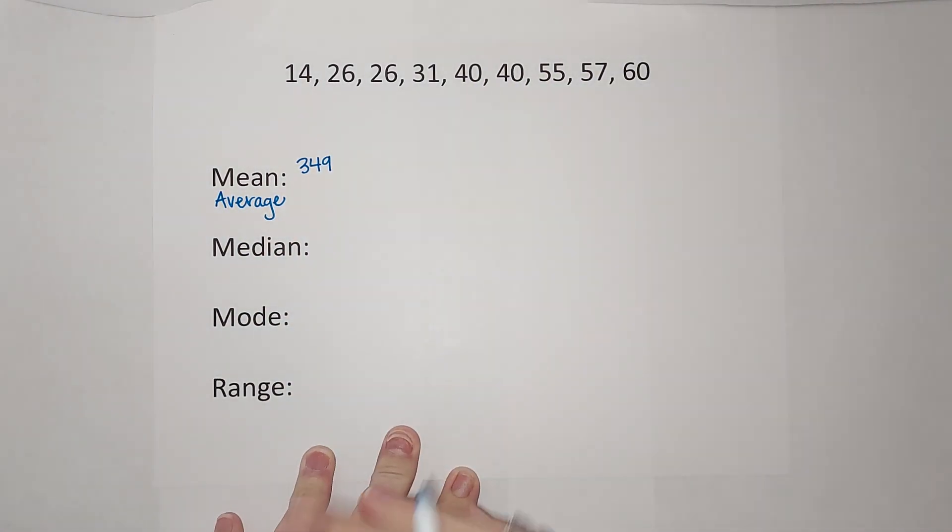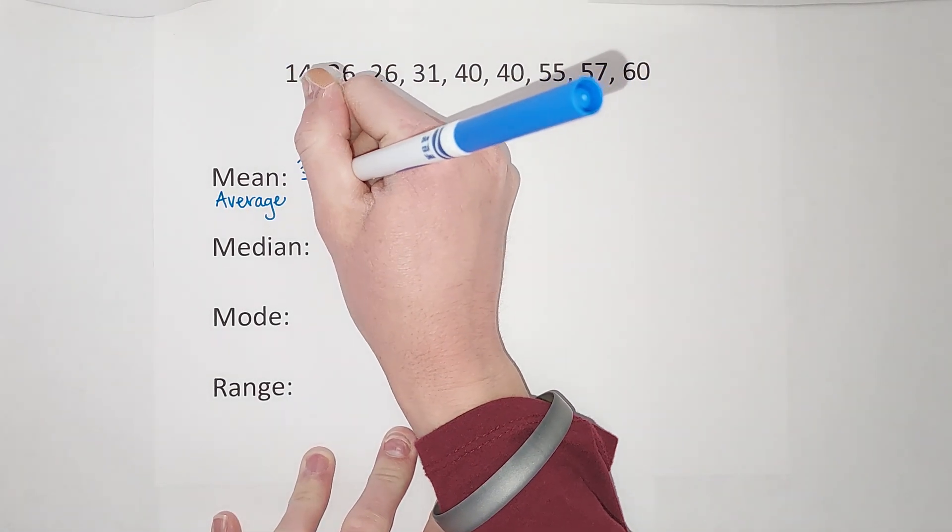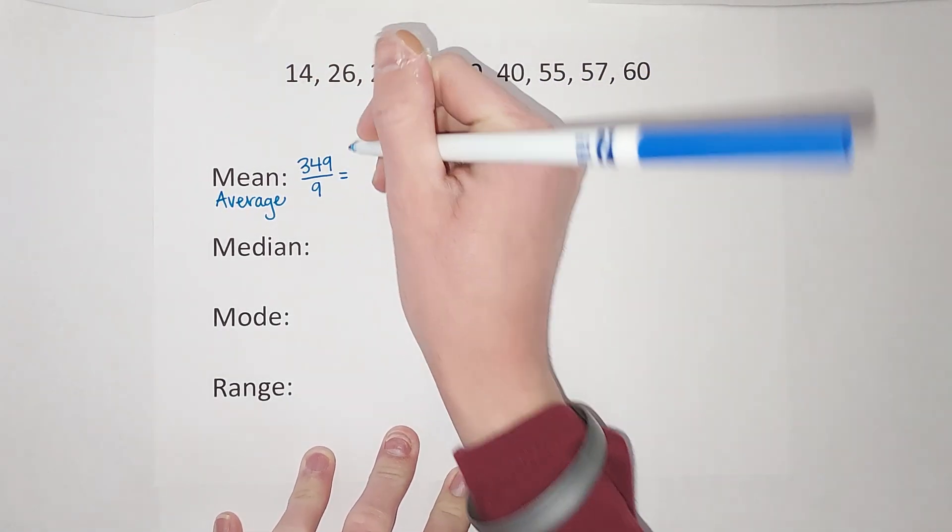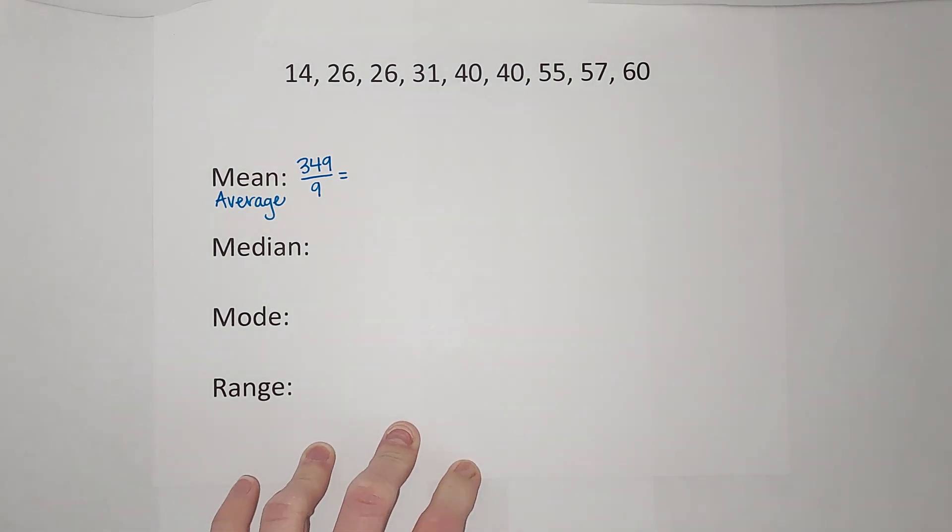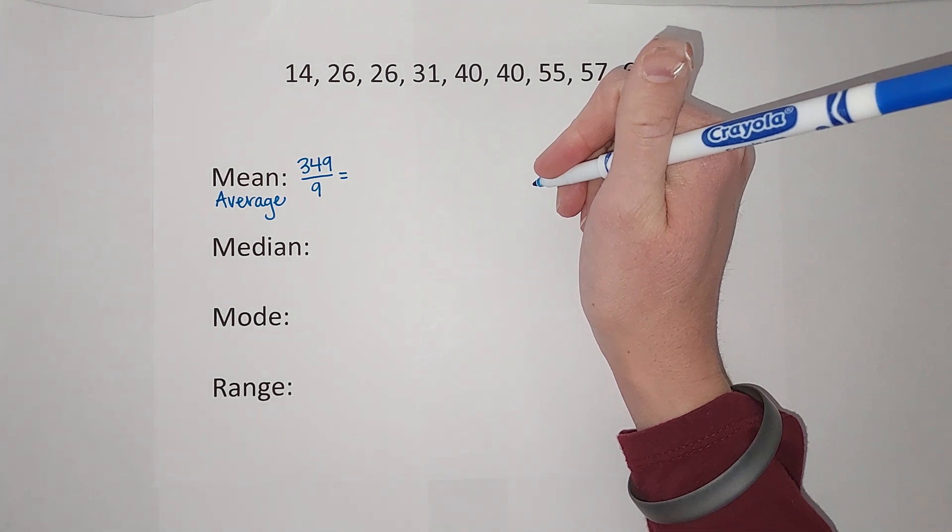I need to divide by how many numbers there are, and in this set there are nine numbers, so we're going to divide that by nine. When I simplify that down, I get 38.777... and seven keeps on going.